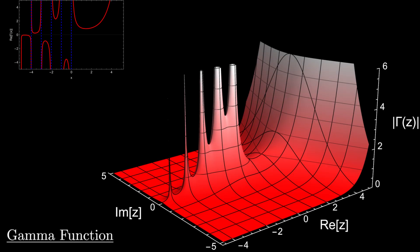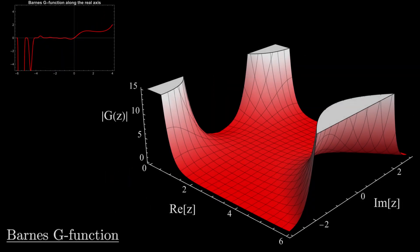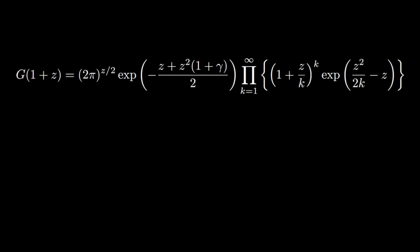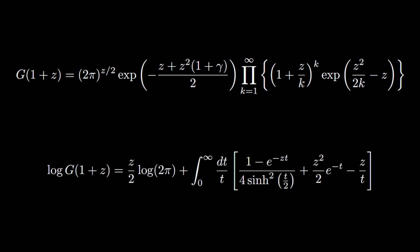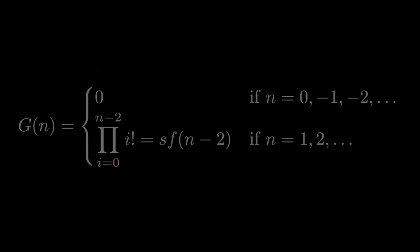Just like how the regular factorial can be extended to non-integer values using the gamma function, the superfactorial has a smooth extension given by something called the Barnes G function. The Barnes G function has both a product representation and an integral representation. For positive integer inputs n, it returns the superfactorial of n minus 2, while for n equals zero or negative integers, it evaluates to zero.